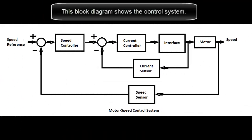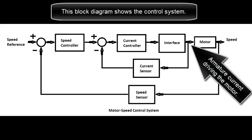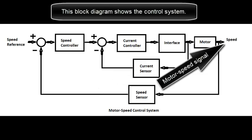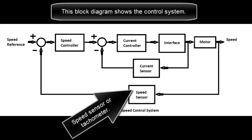This block diagram shows the control system. That's the armature current driving the motor. That's the current sensor and the motor speed signal. The speed sensor or tachometer.